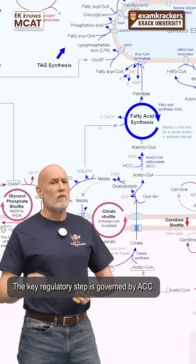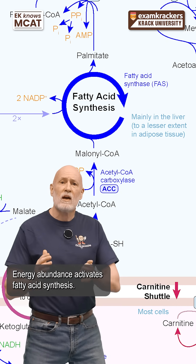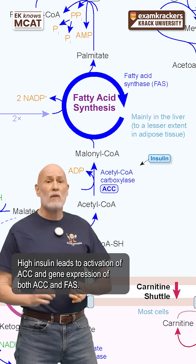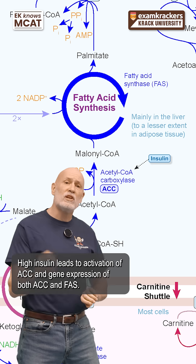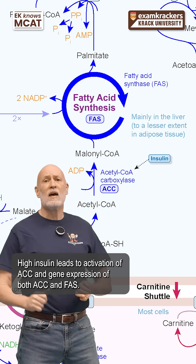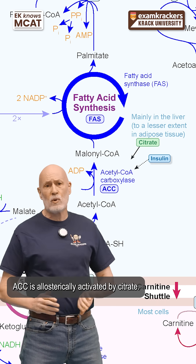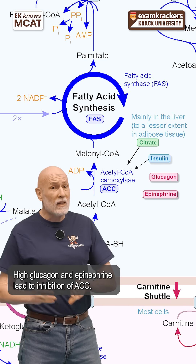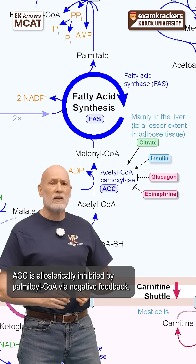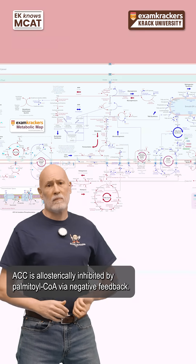The key regulatory step is governed by ACC. Energy abundance activates fatty acid synthesis. High insulin leads to activation of ACC and gene expression of both ACC and FAS. ACC is allosterically activated by citrate. High glucagon and epinephrine lead to inhibition of ACC. ACC is allosterically inhibited by palmitate-CoA via negative feedback.